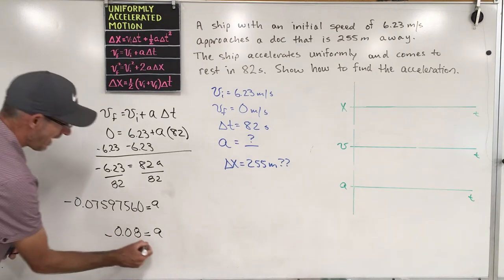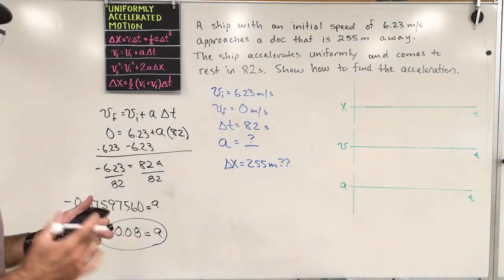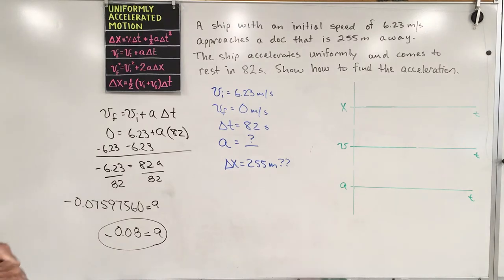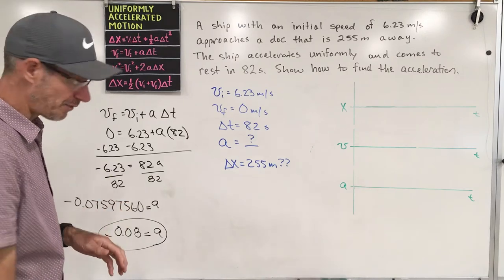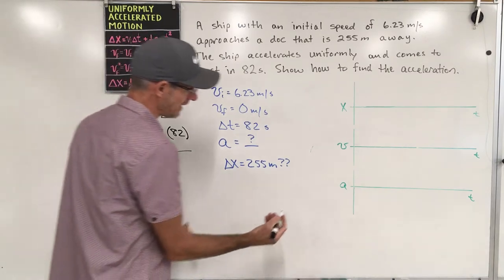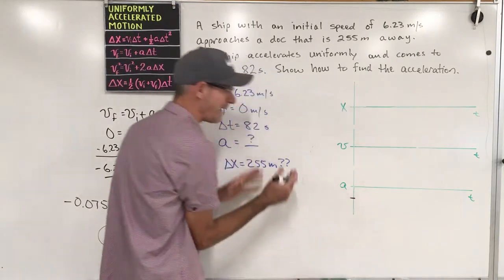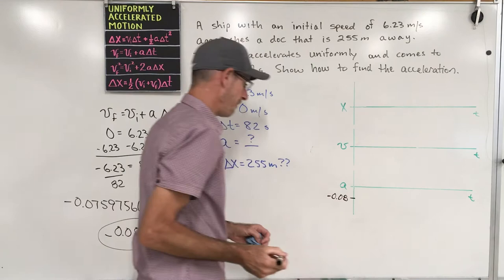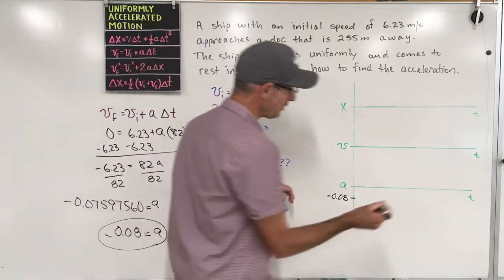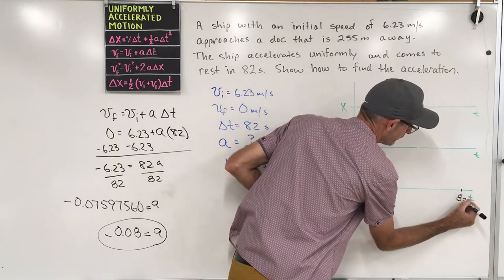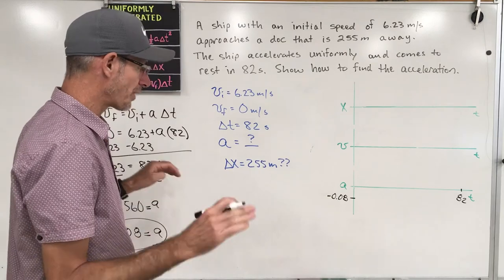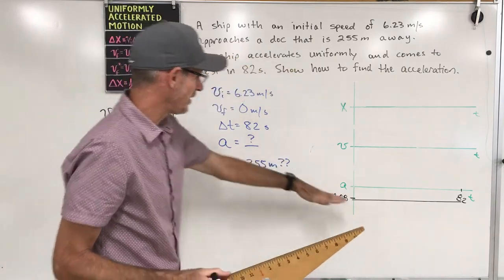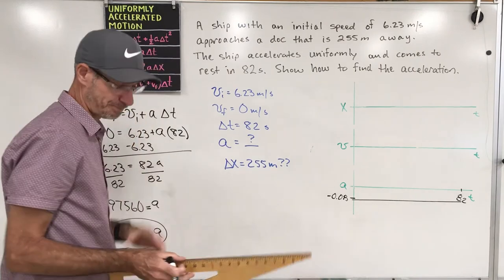Now, can we put it on a graph and does this make sense? This might be the most important part for figuring out how the test will go. The acceleration is negative 0.08, so I'll mark that on the graph. It lasts for 82 seconds, so the acceleration graph is a horizontal line at negative 0.08 meters per second squared — that's our uniformly accelerated motion, constant throughout the entire problem.